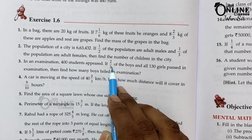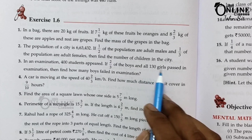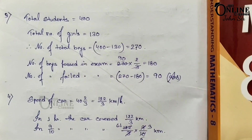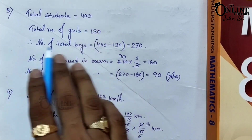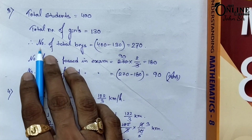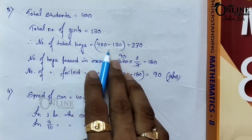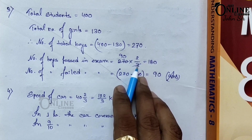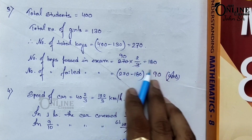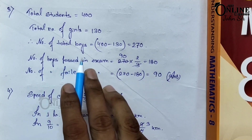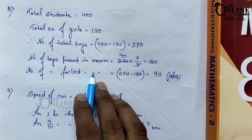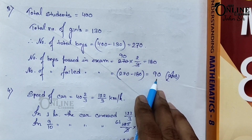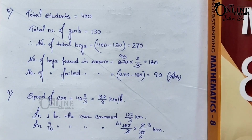Sum number 3: in an examination 400 students appeared. If 2/3 of the boys and all 130 girls passed, find how many boys failed. Total students equals 400, total girls equals 130, so total boys equals 400 minus 130, which is 270. Boys who passed equals two-thirds of 270, giving 180. Therefore, boys who failed equals 270 minus 180, which equals 90.